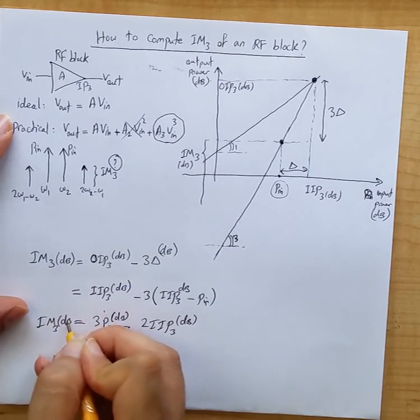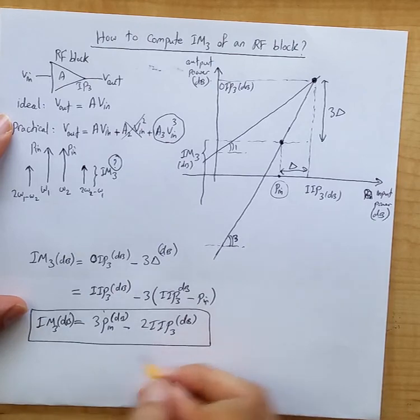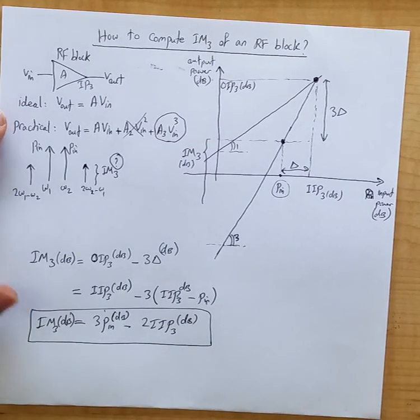That's the input-referred third-order intermodulation product. And we can also write the same relationship for the output-referred version.